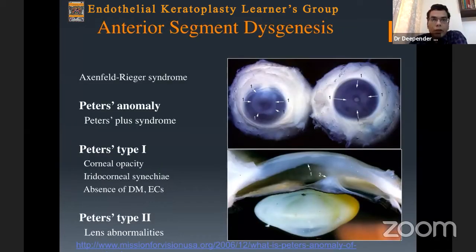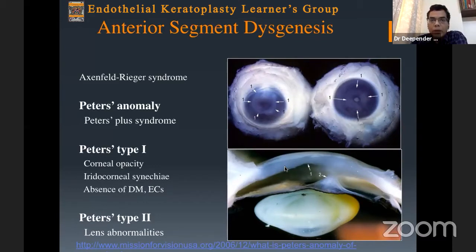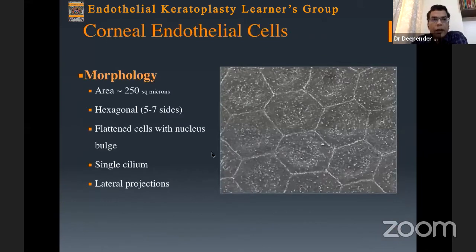A clinical correlation is Peters syndrome. It is believed that during intrauterine development, incomplete migration of these mesenchymal cells or incomplete separation of structures formed by them leads to this anomalous eye. We see a corneal opacity that is predominantly posterior — in the posterior stroma — along with iridocorneal adhesions and at times an associated cataractous lens adhered to them.